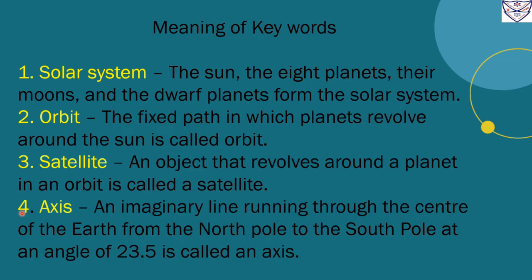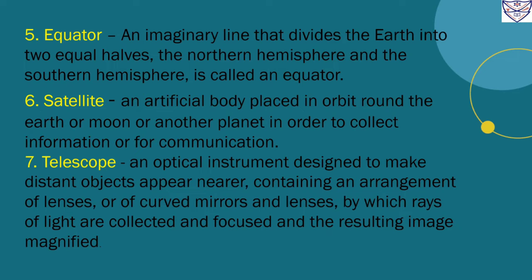Number 4. Axis. An imaginary line running through the center of the earth from the north pole to the south pole at the angle of 23.5 degrees is called an axis.